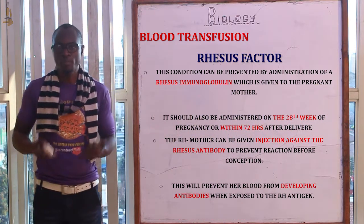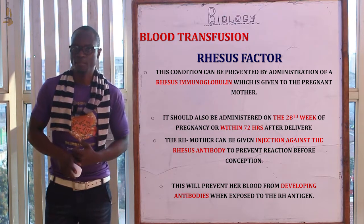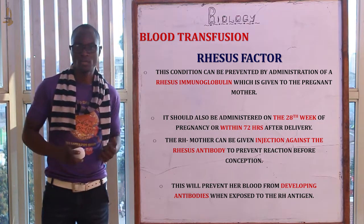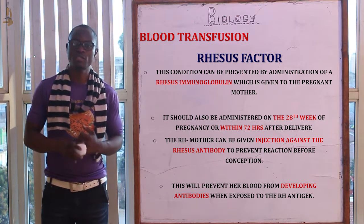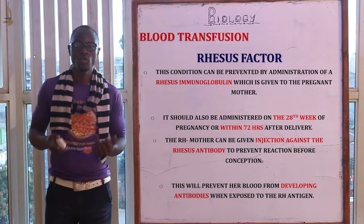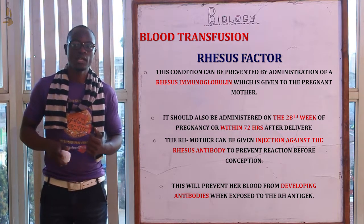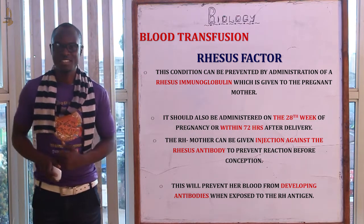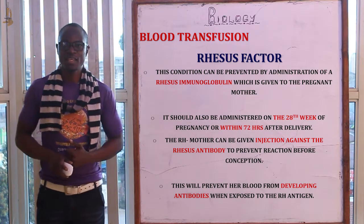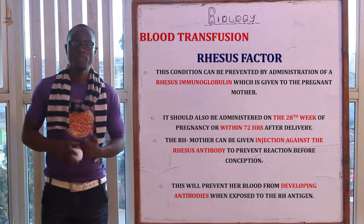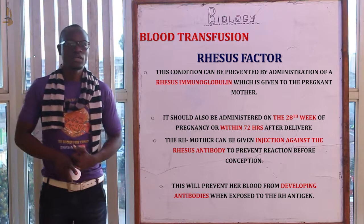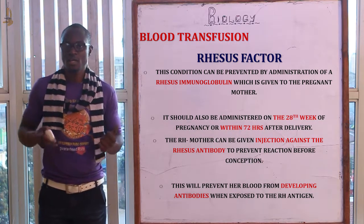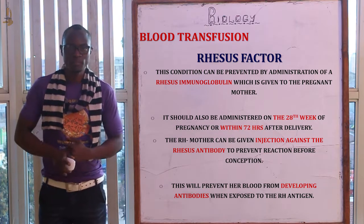This condition can be prevented by the administration of Rhesus immunoglobulin to the pregnant mother. It is important for pregnant mothers to visit the clinic from the first week through to the last week of pregnancy. The immunoglobulin should be administered on the 28th week of pregnancy or within a few weeks after delivery. A Rhesus negative mother can also be given an injection against the Rhesus antibody reaction before conceiving, which prevents her blood from developing different antibodies when exposed to the Rhesus antigen of the fetus.